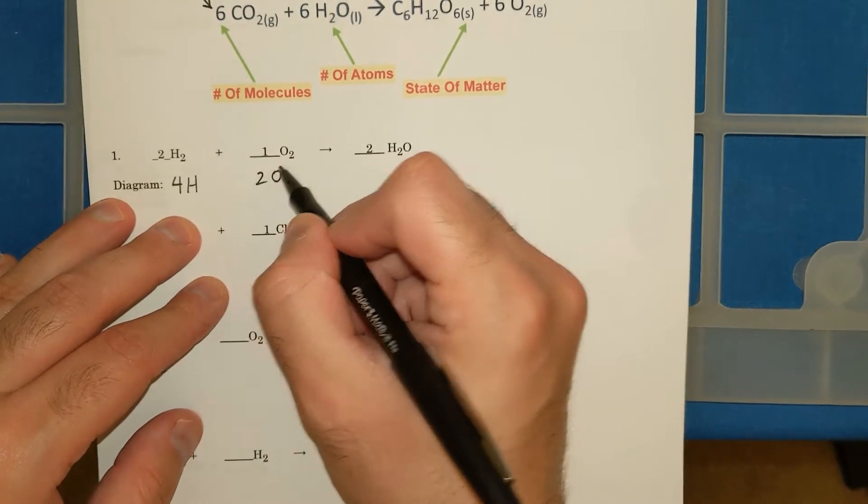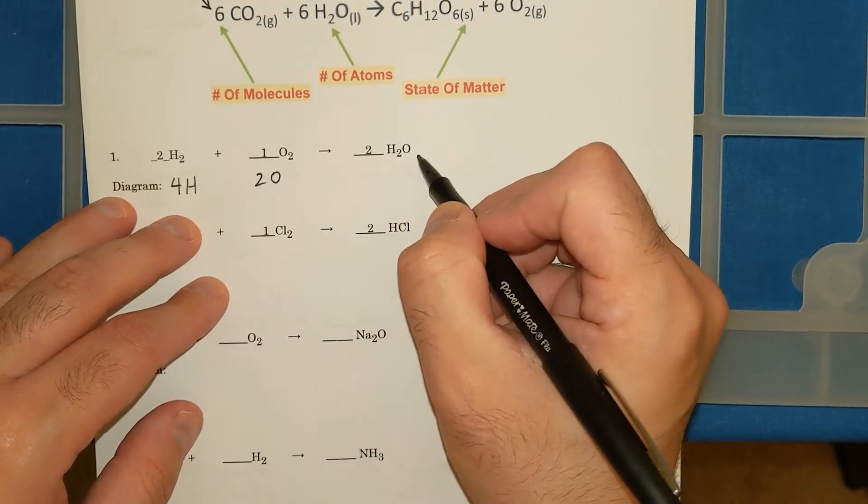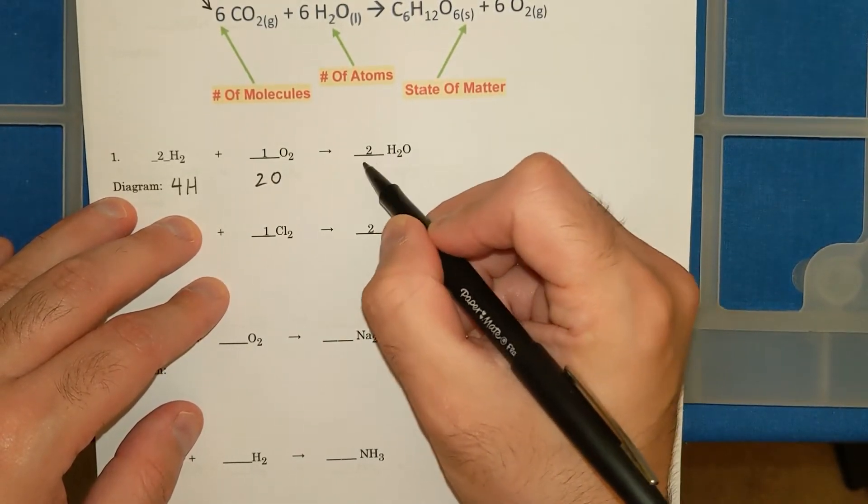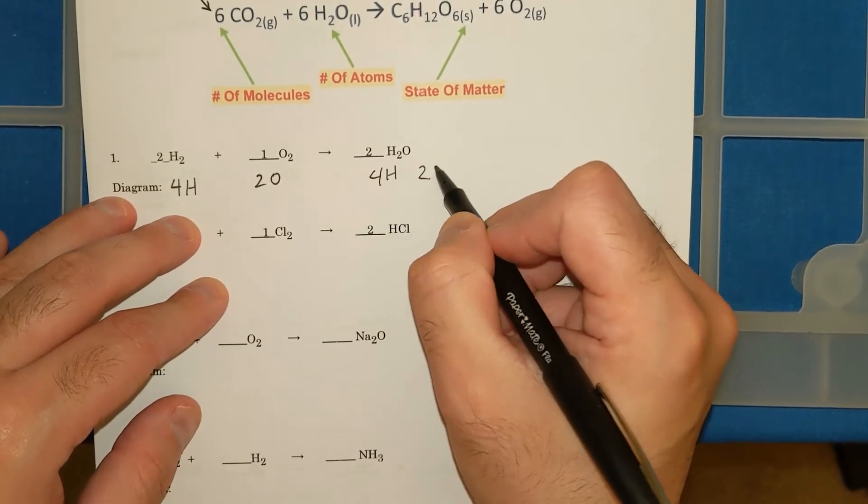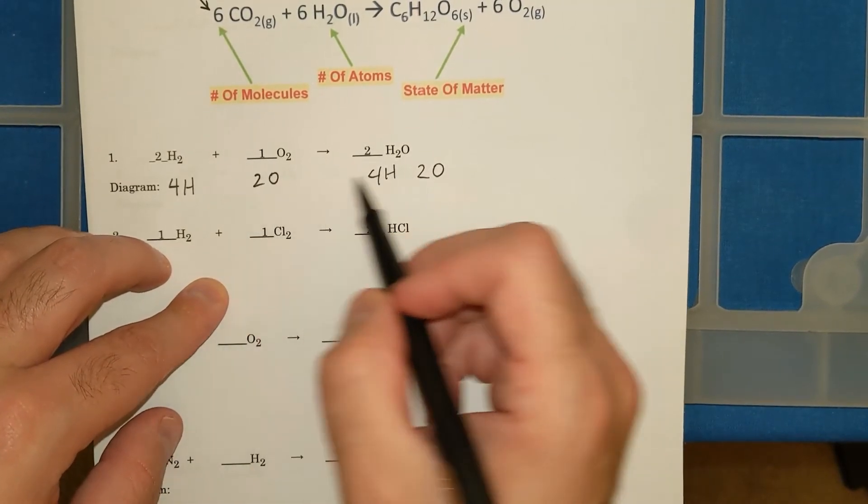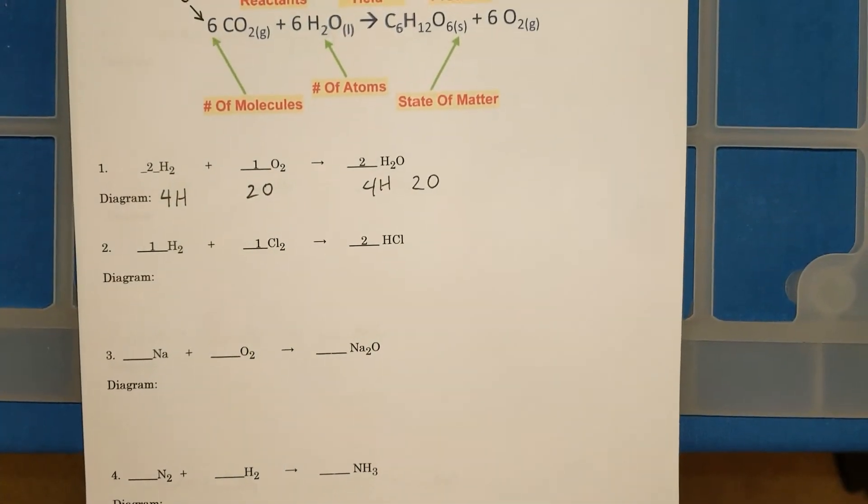1O2 means I have 2 O's. And then I have 2H2O. 2 times H2 is 4 H's. 2O gives me 2 O. So 4 H's, 4 H's, 2 O's, 2 O's, that's balanced.